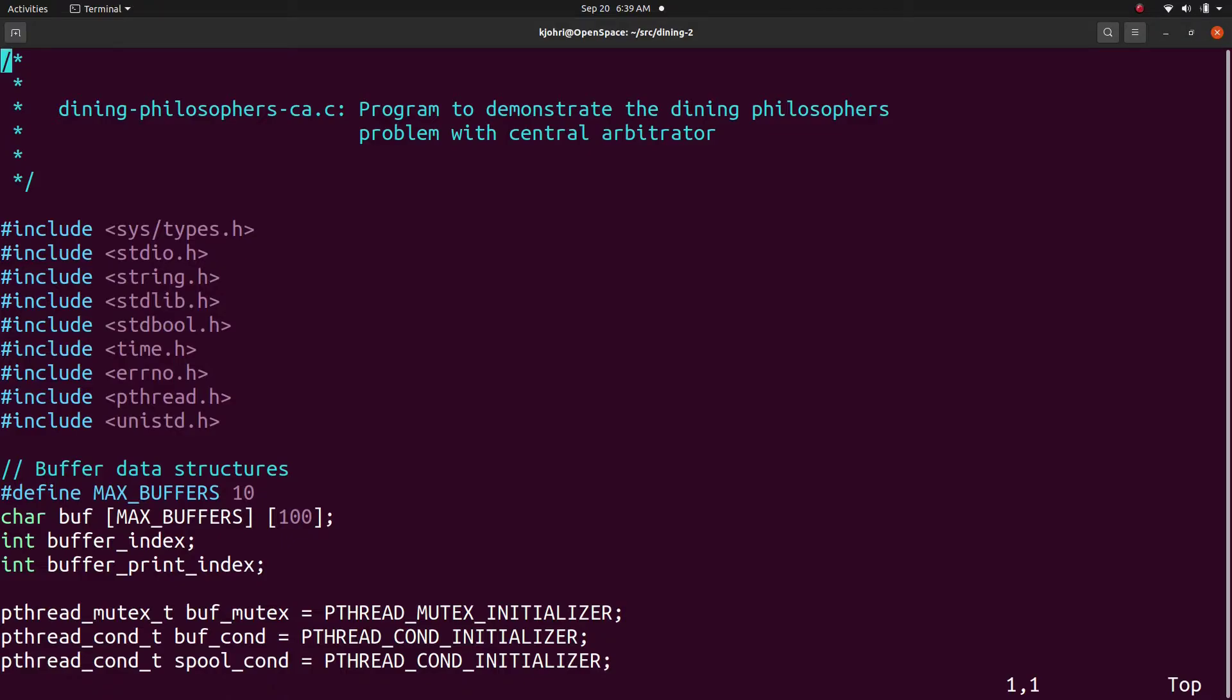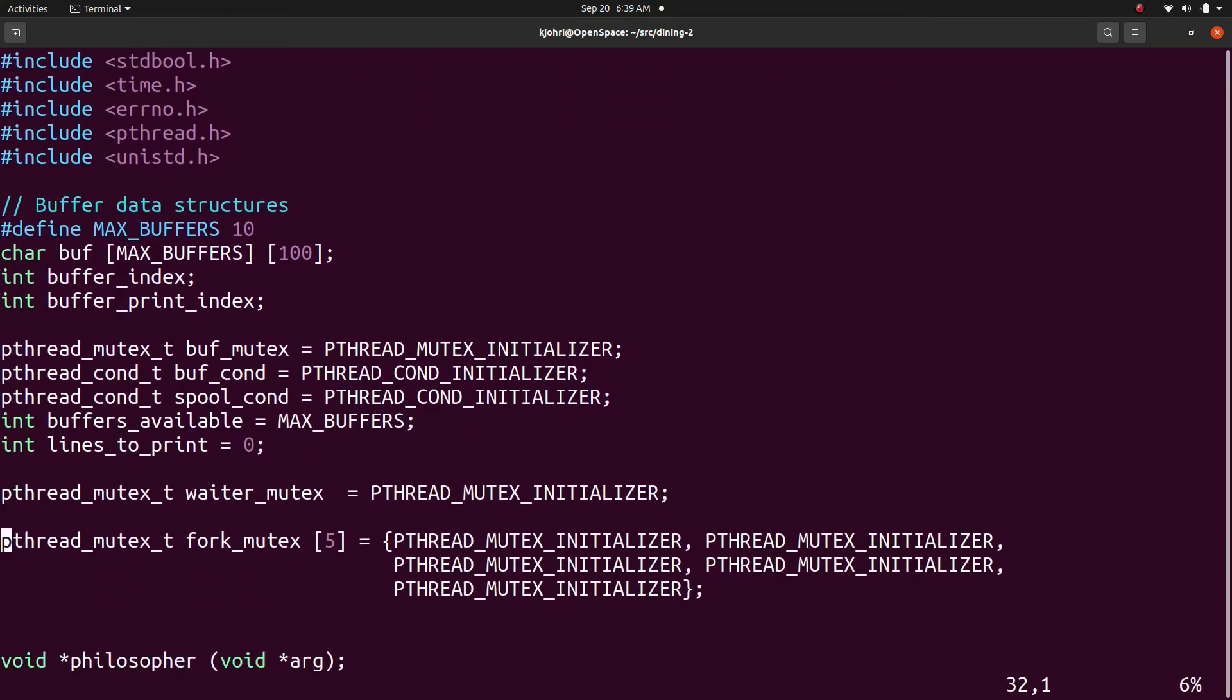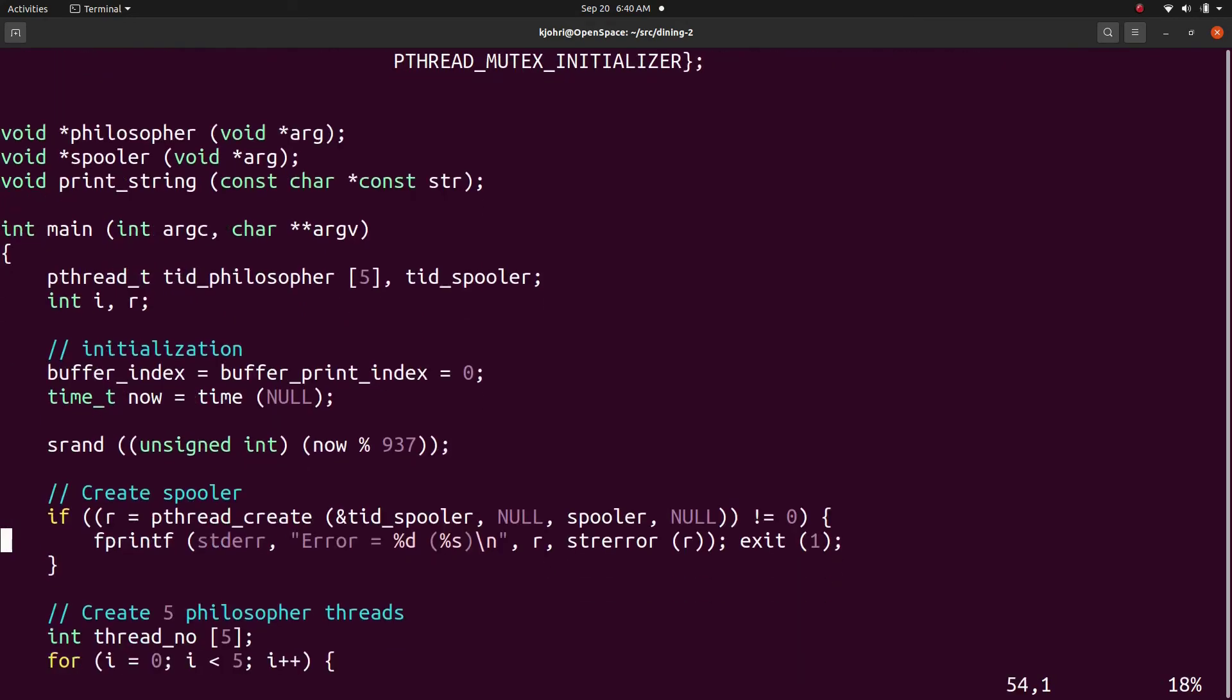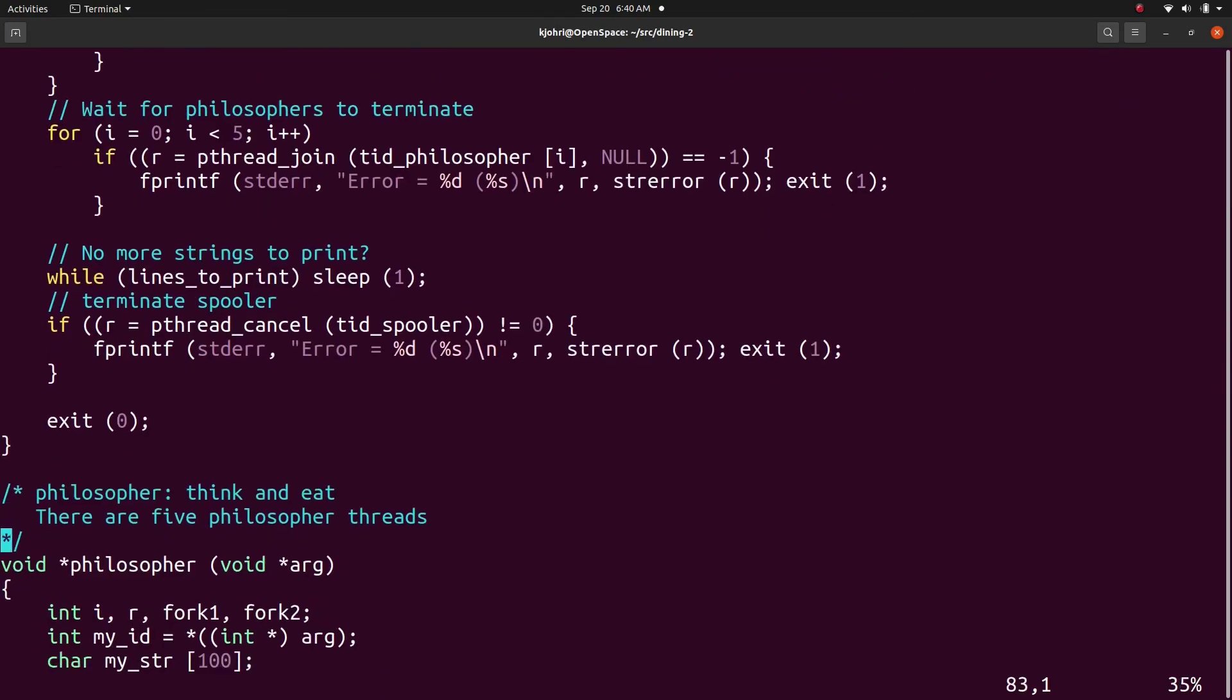And this is the program for solution of Dining Philosophers problem with central arbitrator. The header files and initialization are the same as before. We have a waiter mutex for taking permission to eat from the waiter, and rest of the initialization is the same as before.